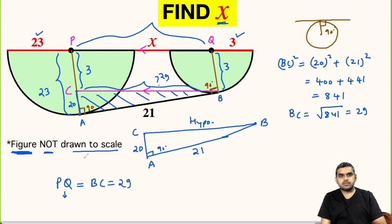Now what is PQ? PQ has three components: the radius of bigger semicircle 23, radius of smaller semicircle 3, and x. So if we add 23 plus x plus 3 we will get 26 plus x which is equal to 29. So we will subtract 26 from both sides, and we will get x equals 29 minus 26, which is 3.